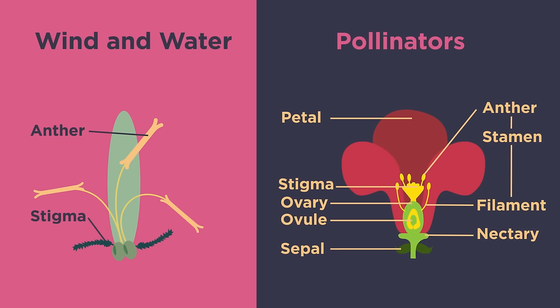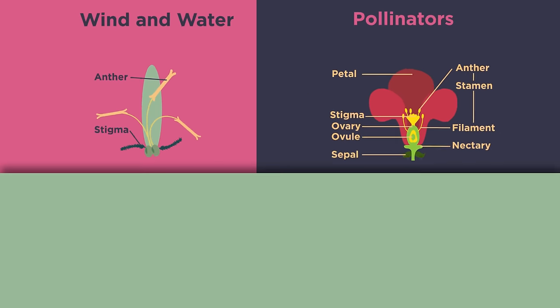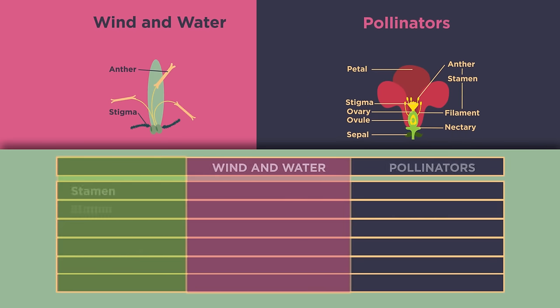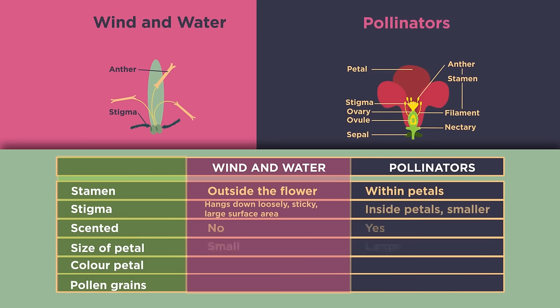Look at the differences in size, scent, and color of the petals, and the positioning of the stamen and style. Here are some key differences — why do you think they are different?